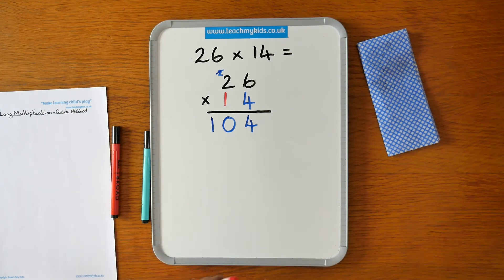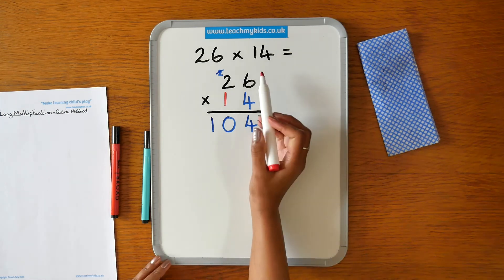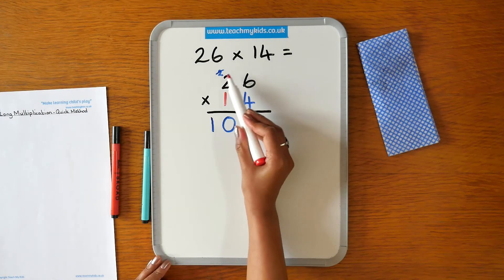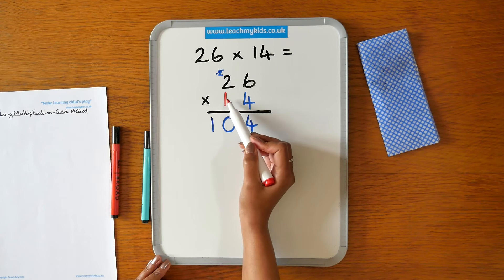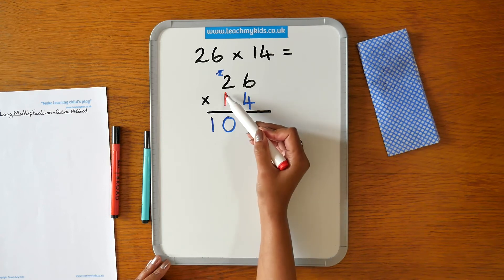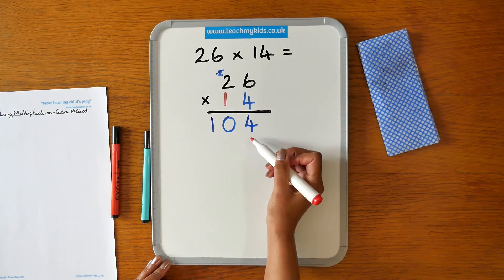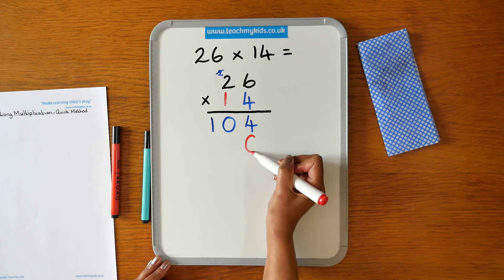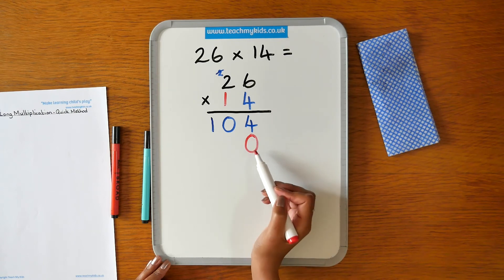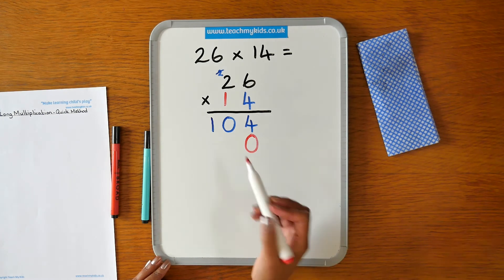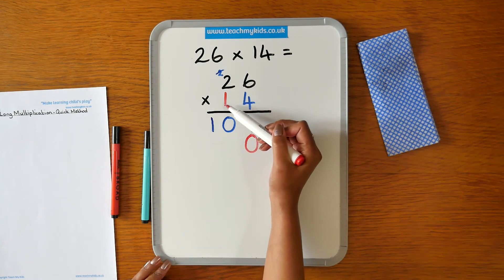Our next step now is to multiply the top number by the 1 or 10. Now because we're multiplying the top number by 10, we need to put a 0 in first because whenever you multiply any number by 10, the answer always ends with a 0. Now we can carry on multiplying.